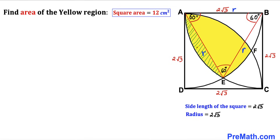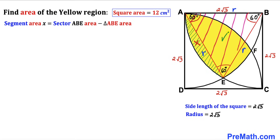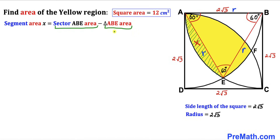Let's focus on the shaded segment area and call it x. We can see that this segment area x equals the whole sector area of ABE minus the area of triangle ABE. So our task is to calculate the area of sector ABE and the area of triangle ABE in order to find segment area x.